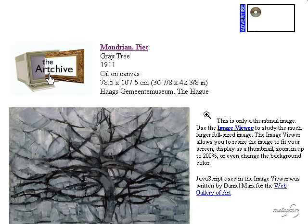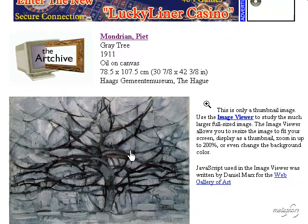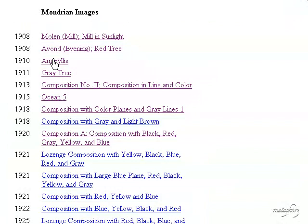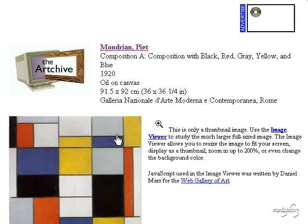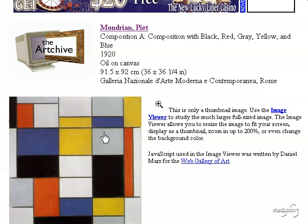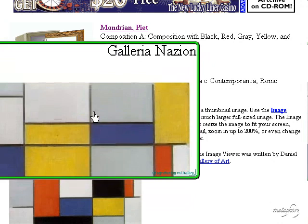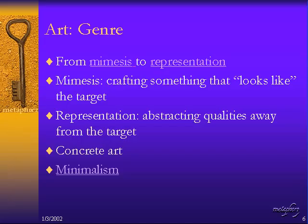However, if we proceed to the 1911 painting 'Gray Tree,' we see something a little bit more abstract — still representing a tree as far as we can discern. Then as we move on in Mondrian's life and his evolution into abstract painting, we get to the 1920 'Composition A' — composition with black, red, gray, yellow, and blue — which represents the kind of highly abstract, geometrical style that has come to be associated with his name.